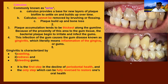Plaque accumulation tends to be thickest along the gum line. Because of the proximity of this area to the gum tissue, the bacteria and plaque begin to irritate and infect the gum, causing a gum infection. Infection of the gum is known as gingivitis, which literally means inflammation of the gingiva. This particular picture is actually a combination of gingivitis and also generalized gum disease — it's no longer just gingivitis but more like a disease.